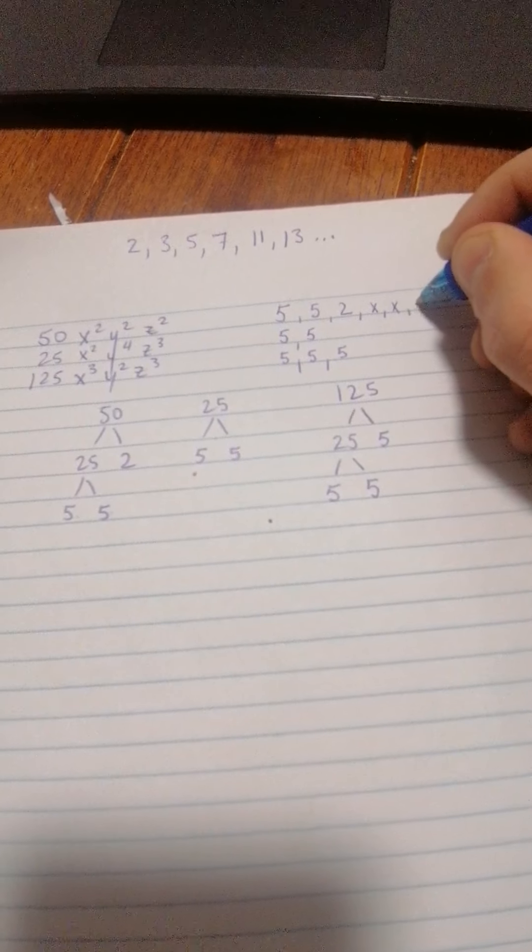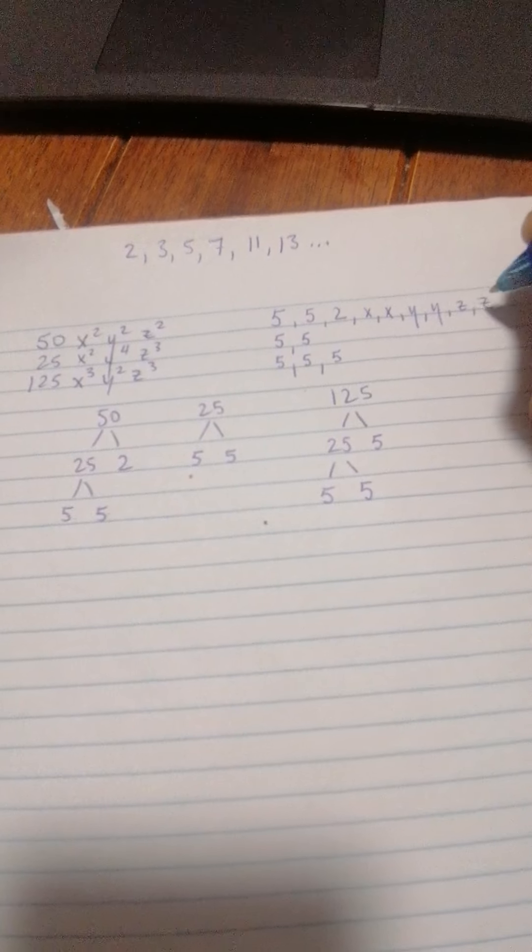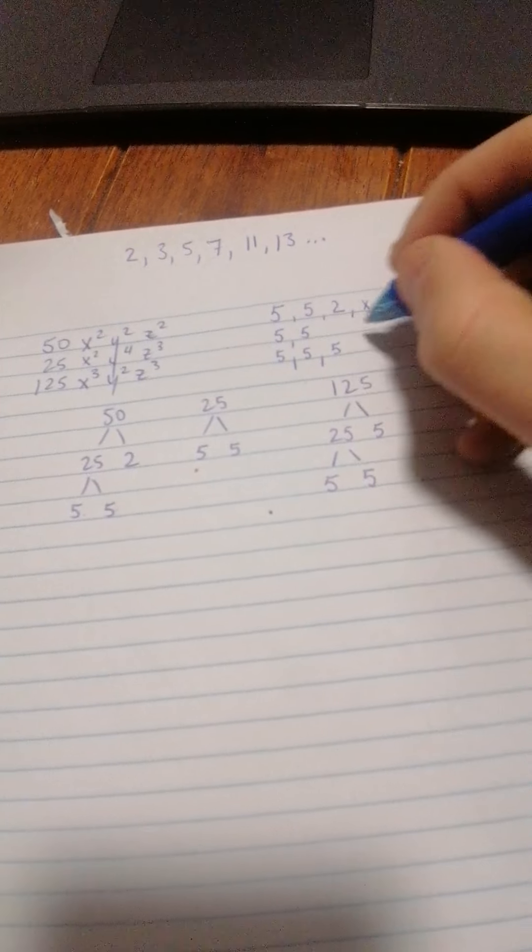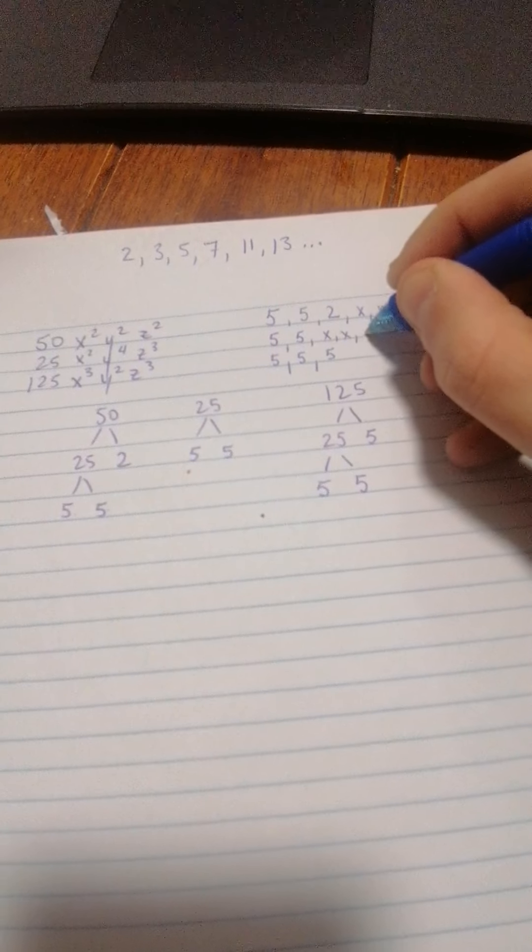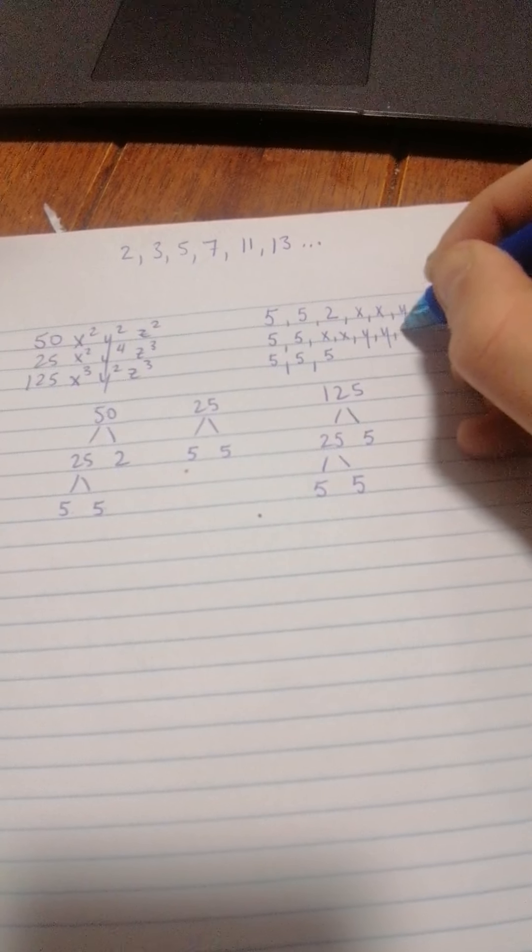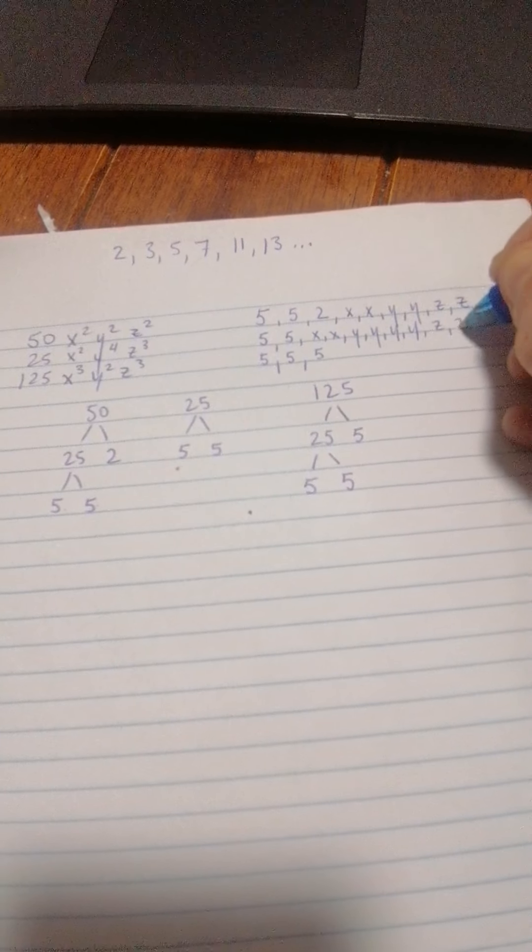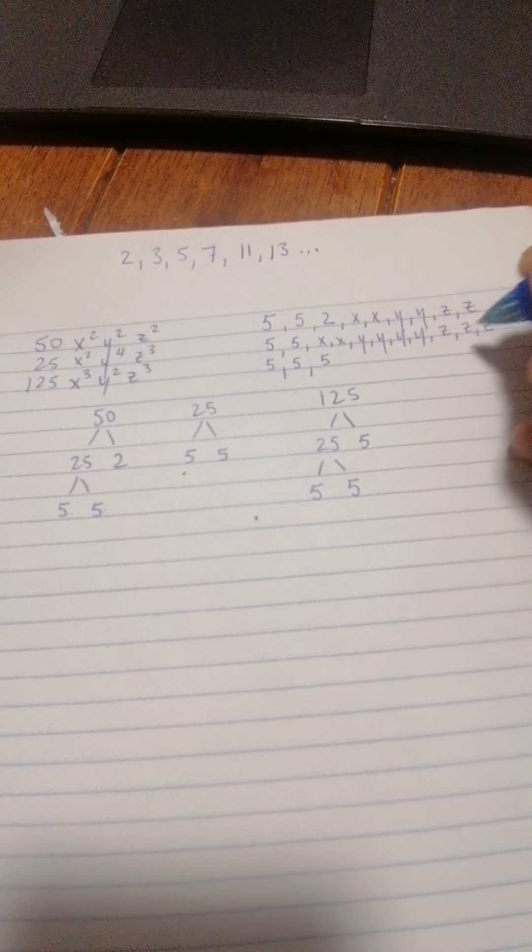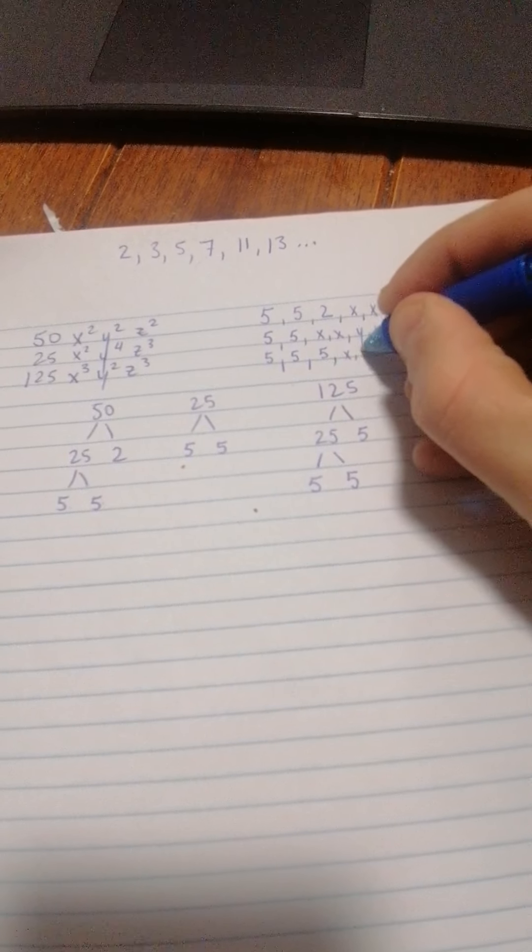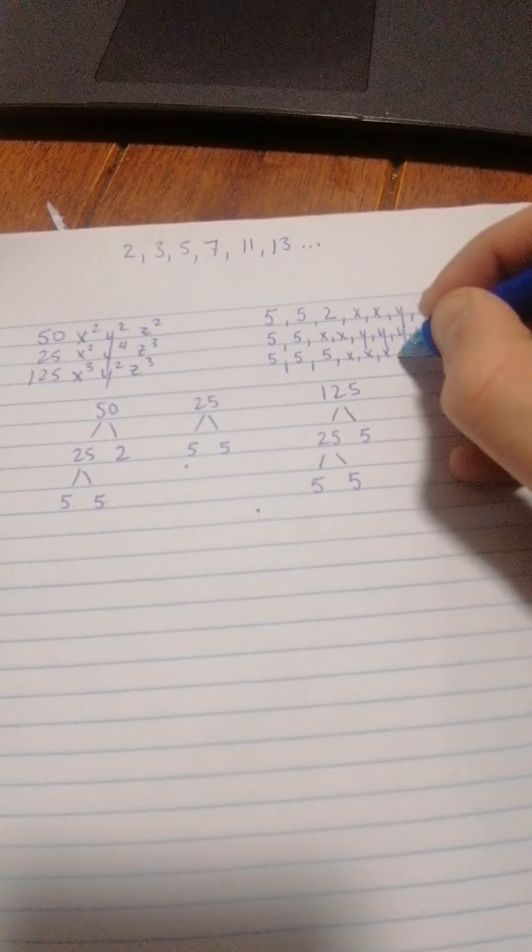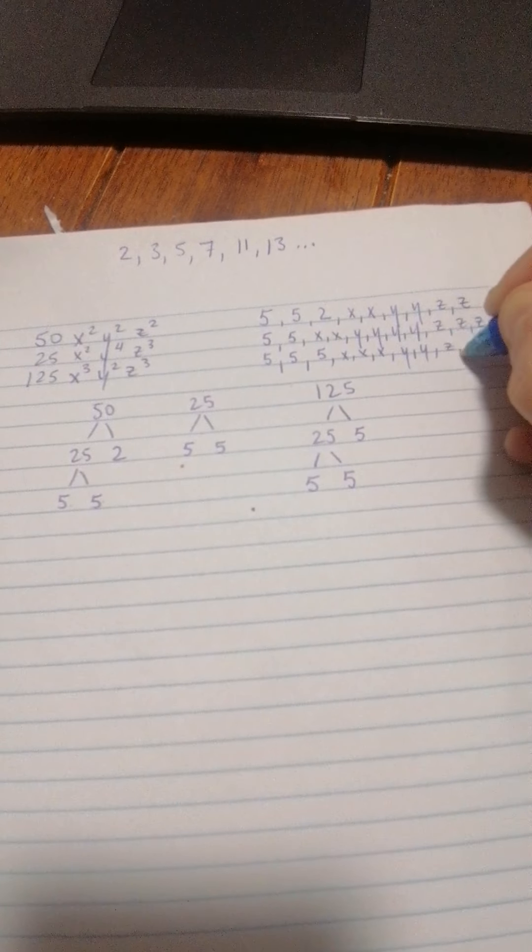So 2 x's, 2 y's, and 2 z's. And the next one is 2 x's, 4 y's, and 3 z's. A lot of writing. And the last one is 3 x's, 2 y's, and 3 z's.